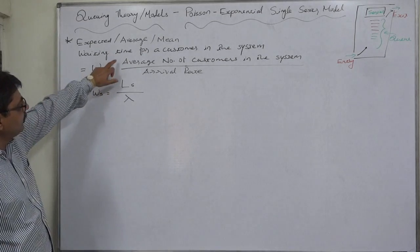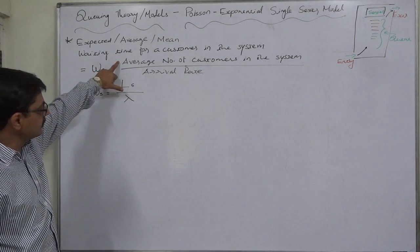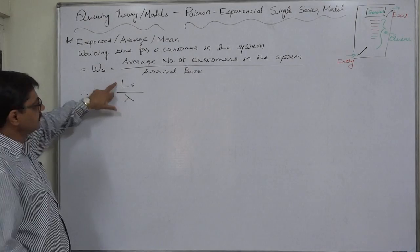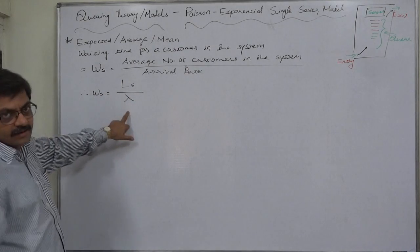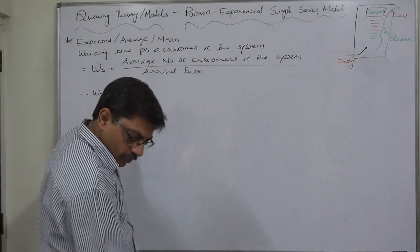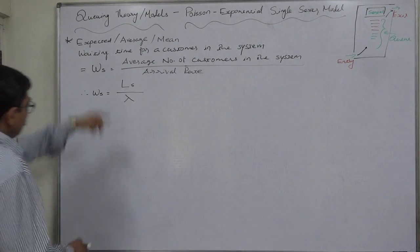We have already found the formula for the average number of customers in the system. The sign is LS, arrival rate is lambda. What is the formula of LS?